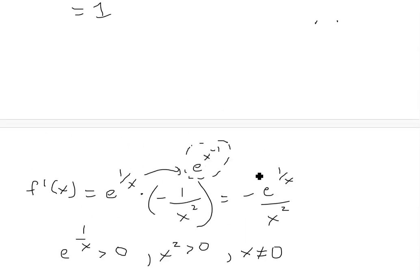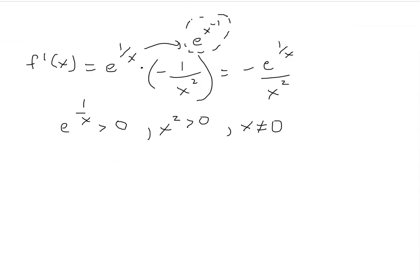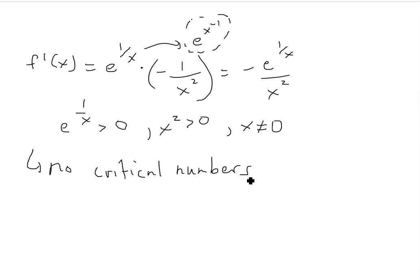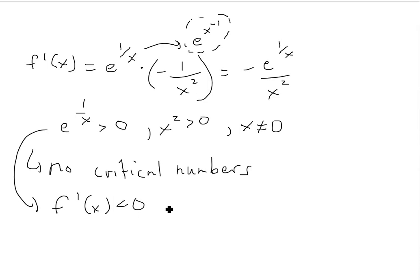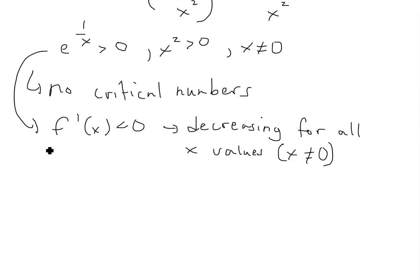Since the derivative is defined everywhere f(x) is defined and is never zero, there are no critical numbers, meaning no local or absolute min or max. With the negative sign and both e to the 1/x and x squared always positive, the derivative is always less than 0, so the function is decreasing for all x where x ≠ 0.